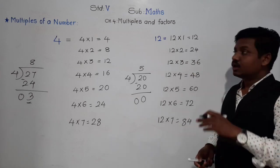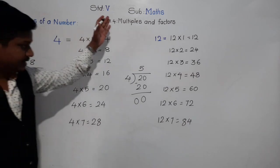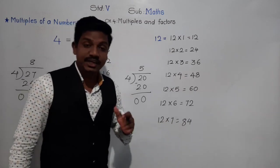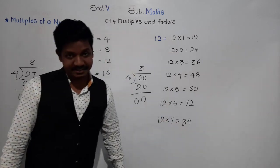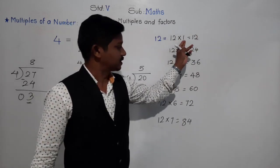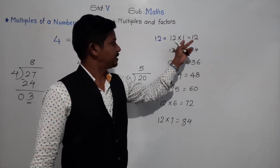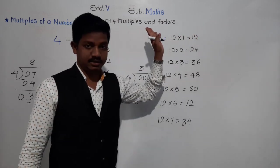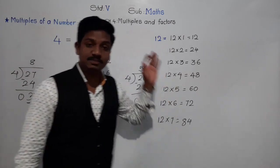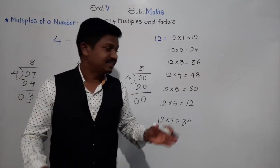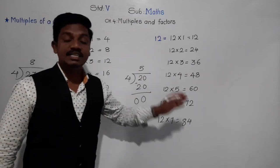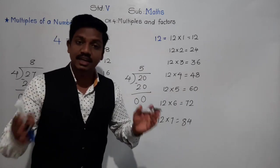These are the multiples of 12. Now, an important question: where does this pattern end? Which is the last multiple of 12? The first multiple is easy to find — 12×1 = 12. But can you tell me the last multiple? As natural numbers are uncountable, the number of multiples is also uncountable. The last multiple cannot be determined.